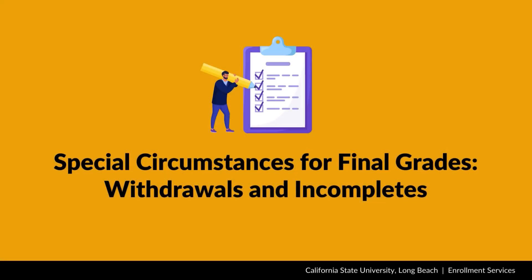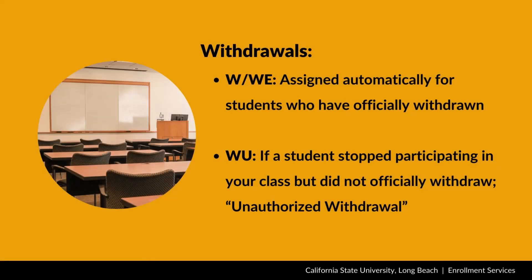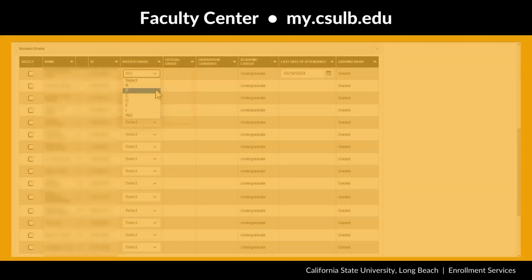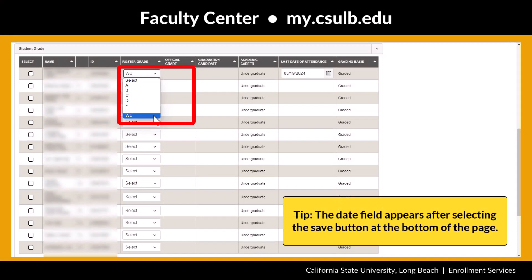When it comes to final grades at the end of the semester, there are some special grading circumstances to keep in mind, including withdrawals and incompletes. Students who have officially withdrawn will have a W or WE grade already assigned. However, if a student stopped participating in your class but did not officially withdraw, you will be able to assign an unauthorized withdrawal or a WU final grade. When you select unauthorized withdrawal, a new field will appear for you to enter the date the student last attended.